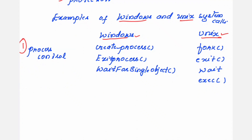For UNIX process control, we have fork, exit, wait, and exec. In this session, I will explain fork, wait, and exec in detail, and I will also tell you about the exit system call. Let me show you an illustration including a program.